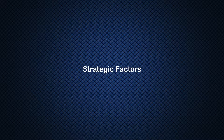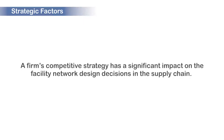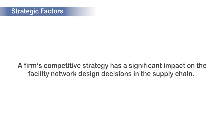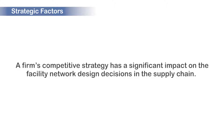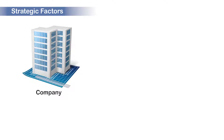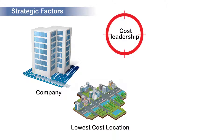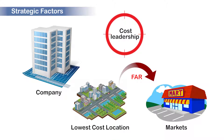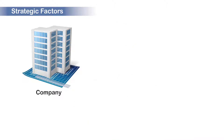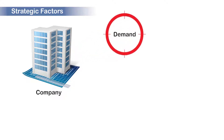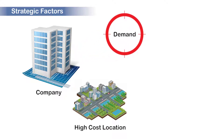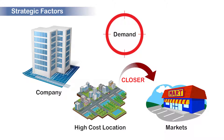Let us start with the strategic factors. A firm's competitive strategy has a significant impact on the facility network design decision in the supply chain. A company which focuses on cost leadership can plan to find a lowest cost location for creating the manufacturing facility, even if the location is far away from the markets they are serving. Similarly, a company which focuses on responsiveness to demand can plan to locate the facility closer to the market and can select a high cost location which may allow them to react quickly to the changing market needs.